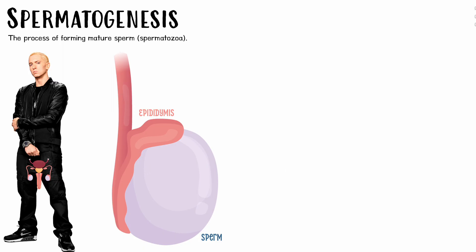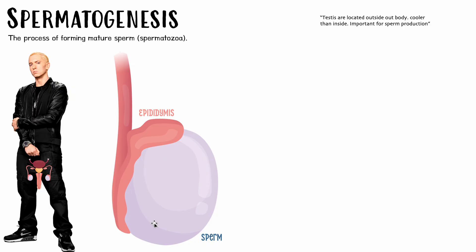A lot of people wonder why the heck are the testes located outside of the body — why not inside, like the female ovaries? It's because in order for sperm to develop properly, they require a very specific temperature: two to three degrees lower than the inside of the body. The inside of the body is too warm for sperm to develop properly, but outside the body the temperature is a bit lower and that allows sperm to develop properly.